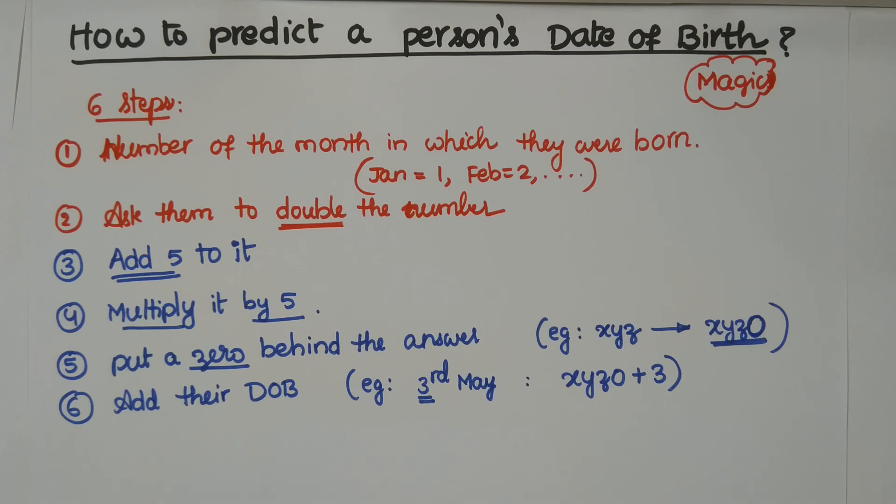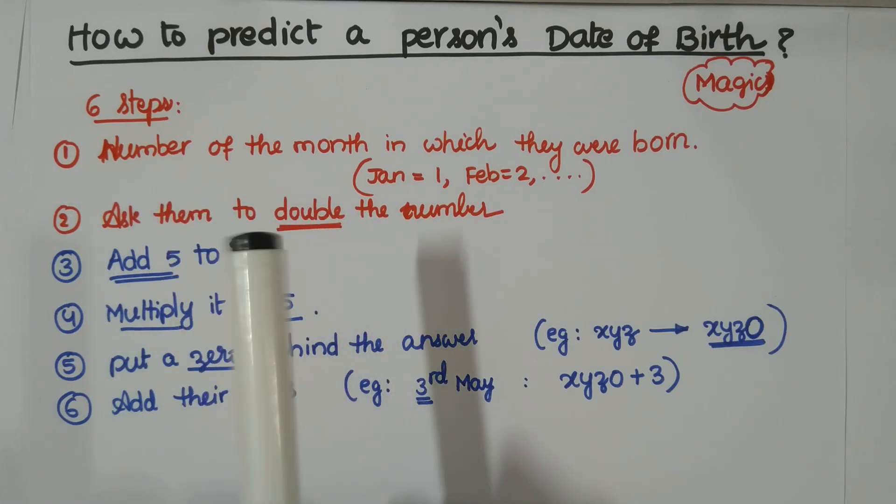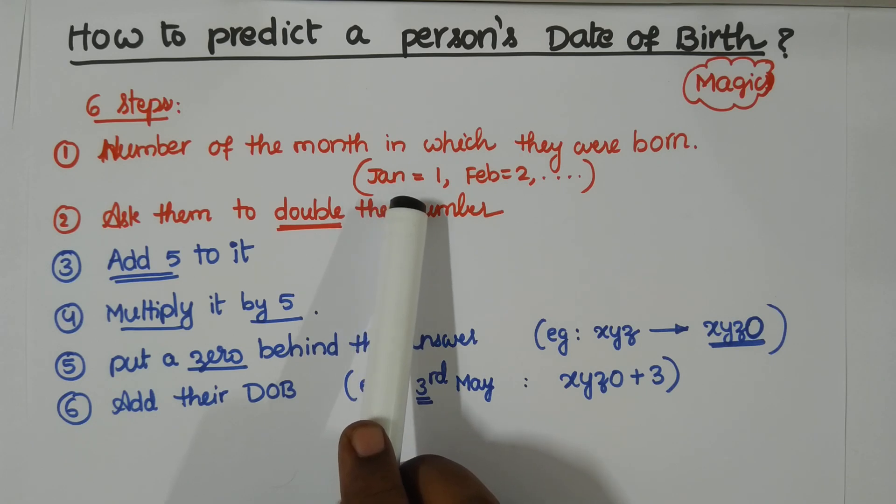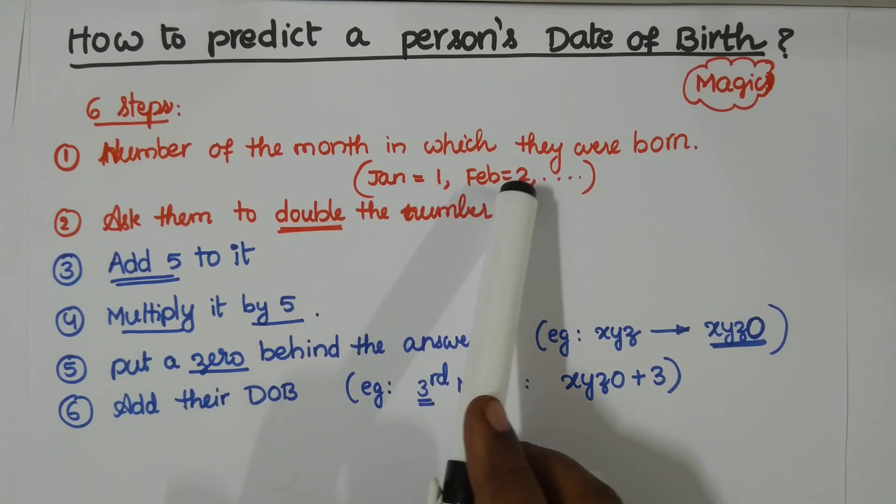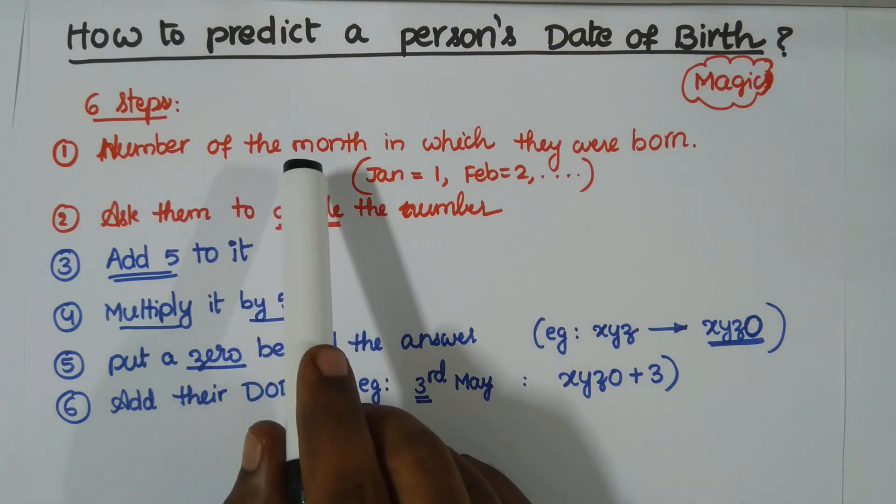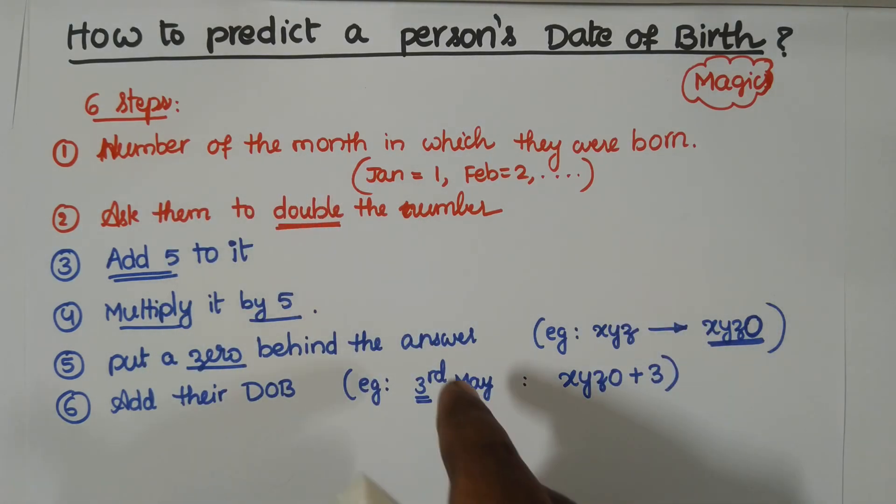You have six steps like this. Ask the people to take the number of the month in which they were born. If they were born in the month of January, just take number one. February means two, March means three, and so on. December means twelve. Step number two: ask them to double the number. The number of the month, they will never tell you. They will keep in their mind. They will perform some mental calculations. End of the day, they will tell that answer to you, and from that answer, you will tell exactly the date of birth.